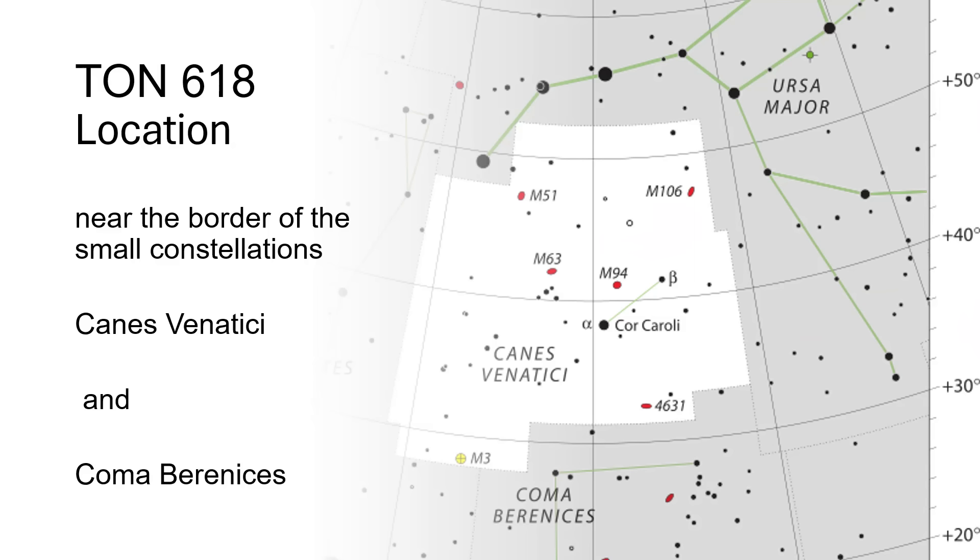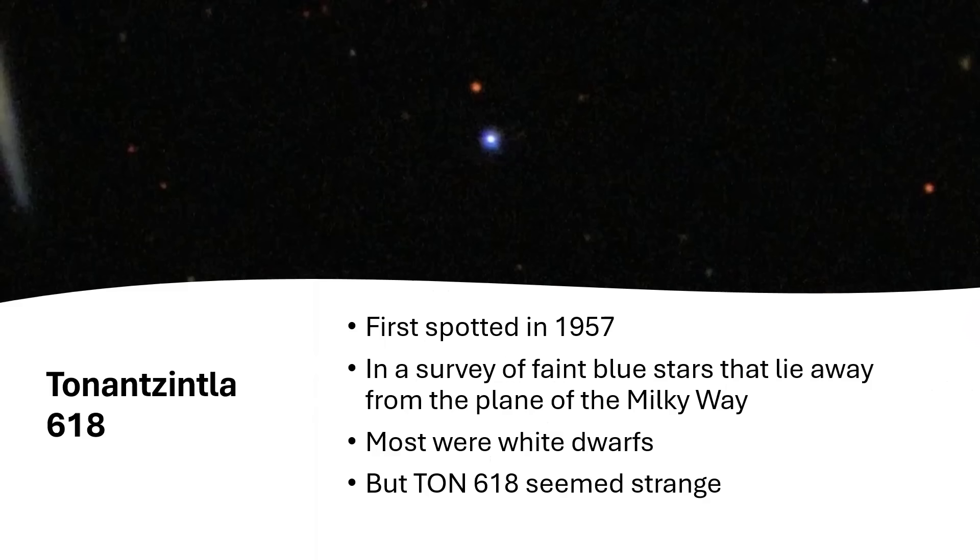First spotted in a survey in 1957, they were surveying faint blue stars away from the galactic plane, away from the plane of the Milky Way. In particular, a lot of these were white dwarf stars. But they came across TON 618, the full name being Tonantzintla 618. But that's a little bit hard to say, so everyone calls it TON 618.